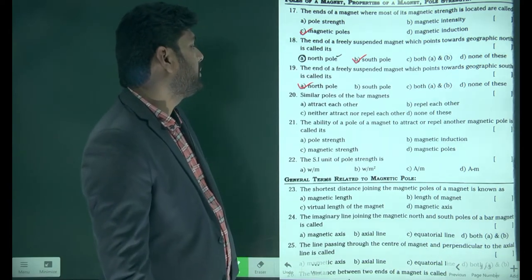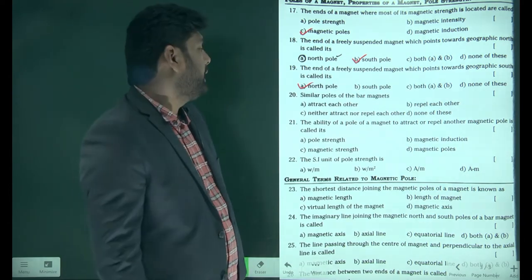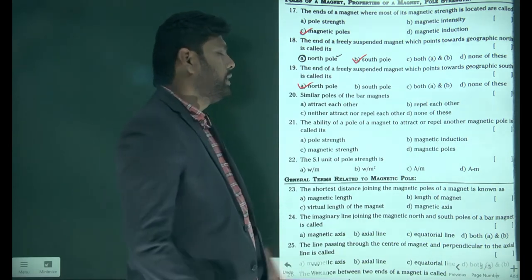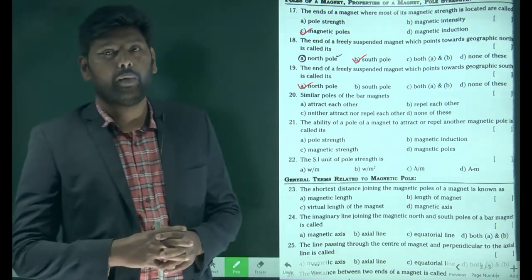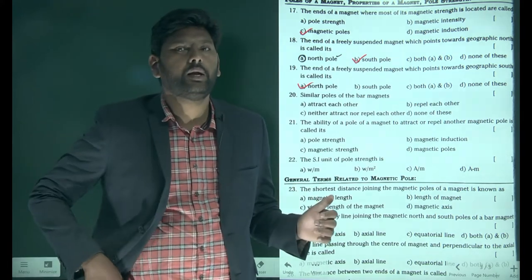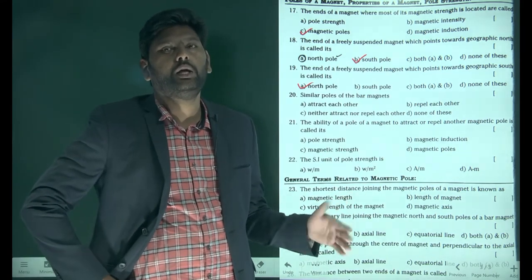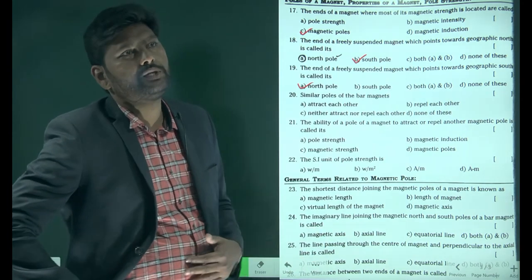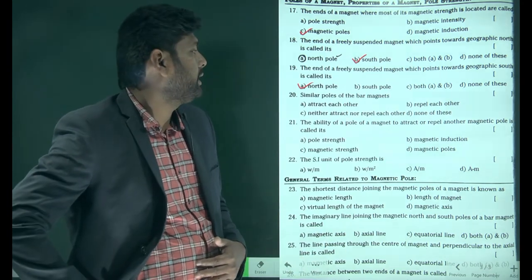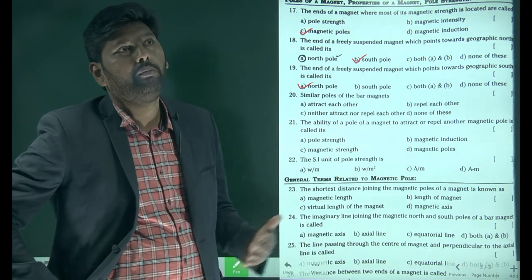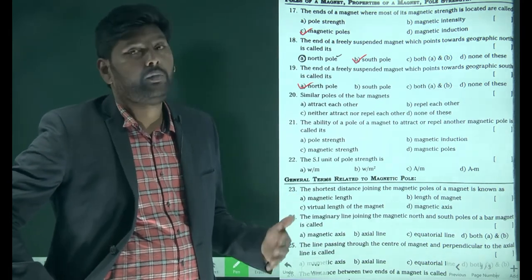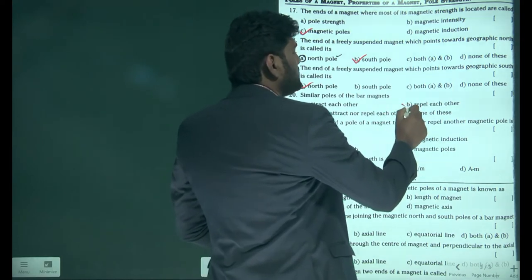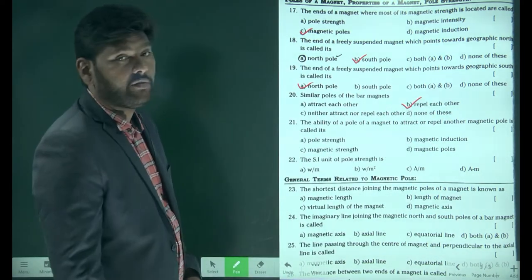Similar poles of the bar magnet repel each other. This represents a property of magnetism. In the properties of magnetism: first is directive property — it shows north and south; next, like poles repel; and third, every time it will have poles. Similar poles of the bar magnet always repel.